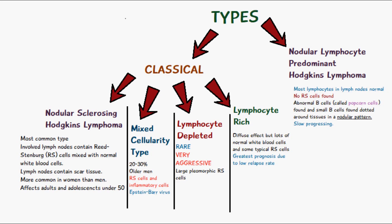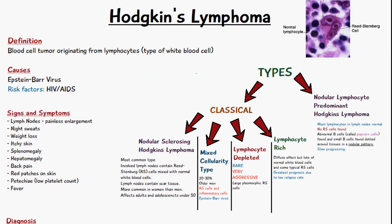In this type of Hodgkin's lymphoma, most of the lymphocytes in the lymph nodes are normal, but there is a presence of popcorn cells which are abnormal. This is a slow progressing form of lymphoma.